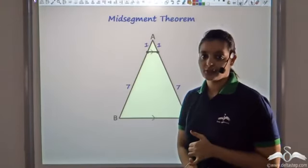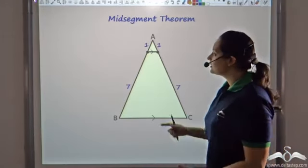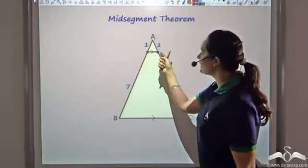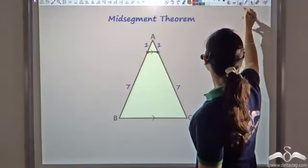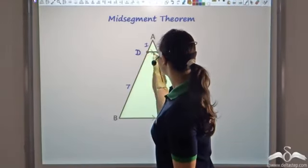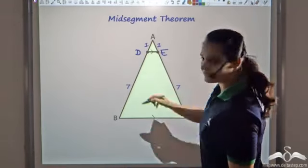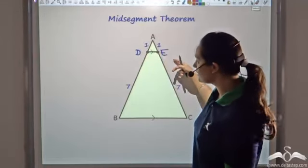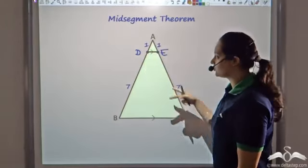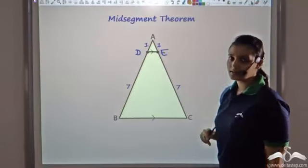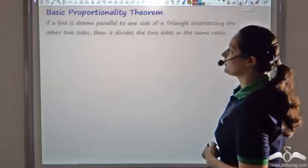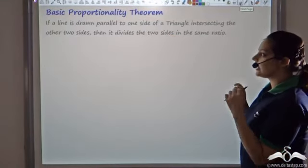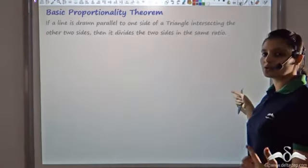The basic proportionality theorem states that if any line is drawn in a triangle parallel to one of its sides, then that line intersects the other two sides at two points — say D and E. Basic proportionality theorem states that it would divide the triangle's other two sides in equal ratios. So you get 1:7 on one side and 1:7 on the other. Now let us try to prove this theorem.